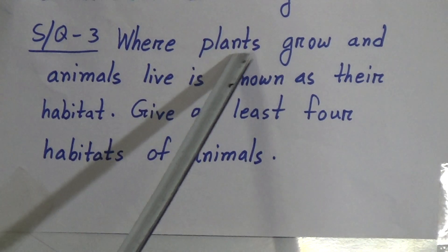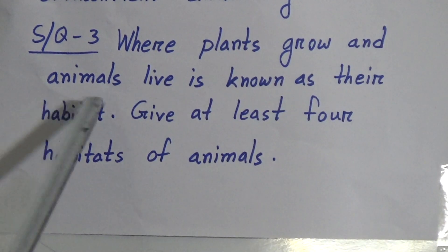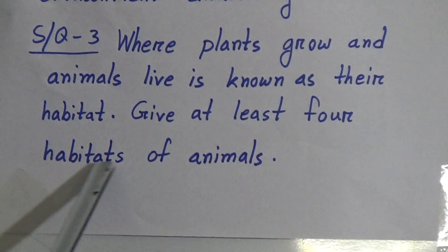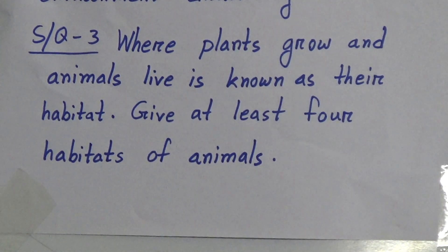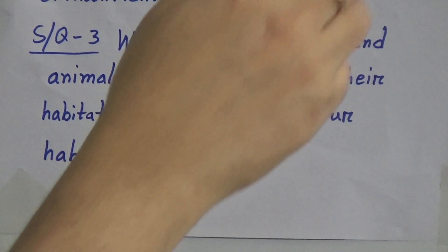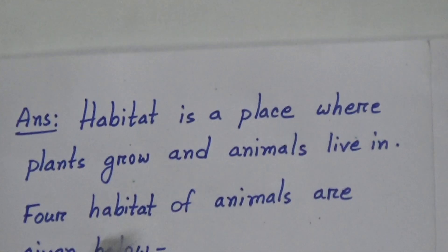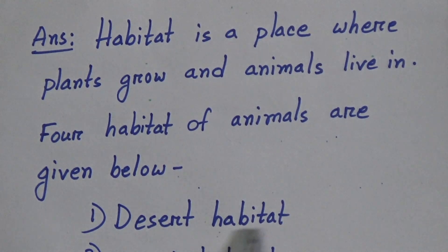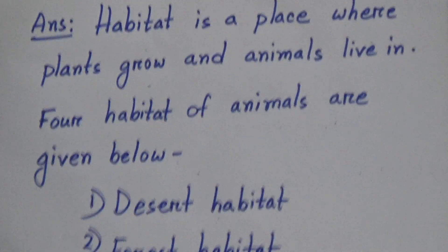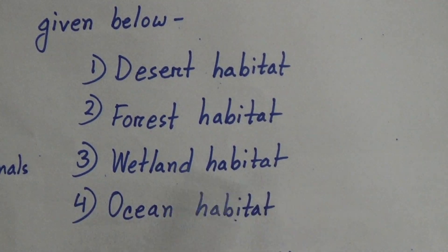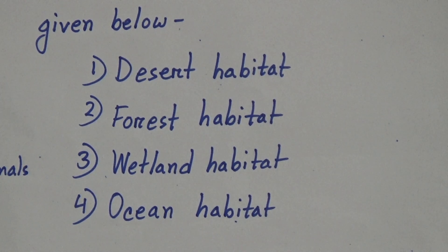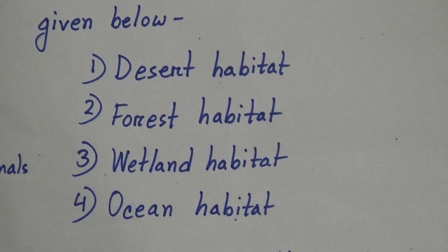Short question three: where plants grow and animals live is known as their habitat. Give at least four habitats of animals. Answer: four habitats of animals are given below. One: desert habitat. Two: forest habitat. Three: wetland habitat. Four: ocean habitat.